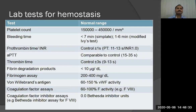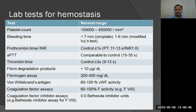Lab tests to assess hemostasis include platelet count, bleeding time, prothrombin time, INR, aPTT, thrombin time, fibrin degradation products, fibrinogen assays, von Willebrand antigen analysis, coagulation factor assays, and coagulation factor inhibitor assays.